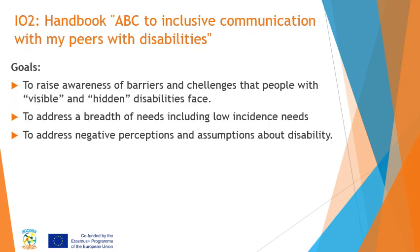Intellectual Output 2 is a handbook. We call it the ABC to inclusive communication with my peers with disabilities. In it, we seek to raise awareness of barriers and challenges that people with visible and hidden disabilities face. In doing so, we want to address a breadth of needs, including low incidence needs, and to address negative perceptions and assumptions about disability.